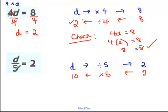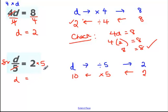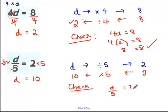Algebraically: I've got d divided by 5, so I multiply each side by 5. Multiplying by 5 then dividing by 5 leaves just d, so d equals 2 times 5, which is 10 — matching our flow chart. To check: the original equation was d divided by 5 equals 2; substituting d equals 10, we get 10 divided by 5 equals 2, and 2 equals 2. Correct.